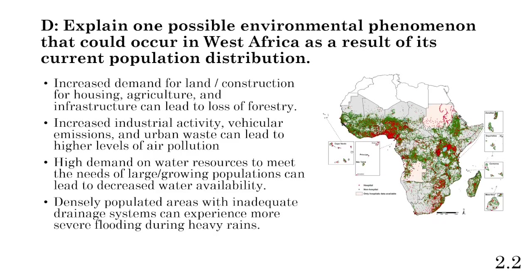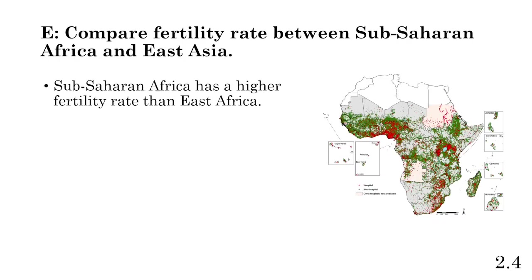The fertility rate is higher in Sub-Saharan Africa than East Asia because they have less developed healthcare systems. While discussing infant mortality rates, people often ask: why are birth rates higher in countries with high infant mortality? Because in countries with high infant mortality, there's a high chance your child will die very young and a low chance it will survive to adulthood. So parents have many children as insurance that some will survive to adulthood.